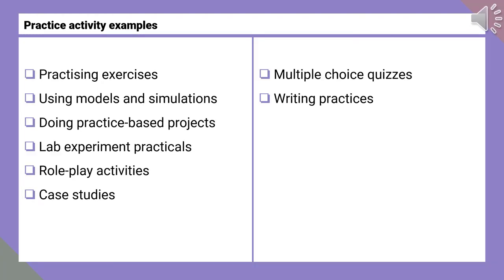The practice learning type provides students with opportunities to apply their knowledge and skills whilst getting feedback from peers, tutors, and lecturers. Examples include case studies which students can work through and get feedback from their group tutor or lecturer, or engaging in multiple choice questions where incorrect answers can have feedback explaining why those options are not correct.